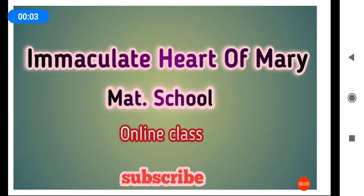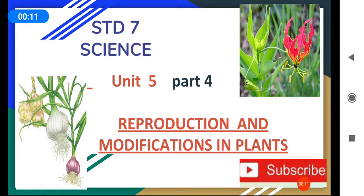Hello students, 7th standard students, I welcome you all for this science video. We are learning the lesson reproduction and modifications in plants. Through the previous videos, we learnt reproduction in plants — two types of reproduction: sexual reproduction and asexual reproduction. After fertilization, flowers changed into fruits. So today, we are going to know the modifications in plant parts.